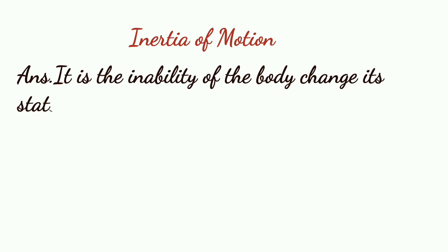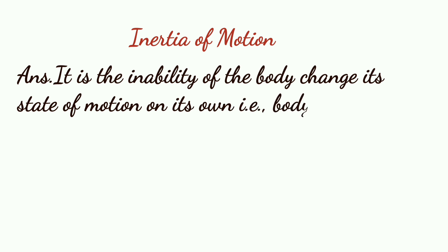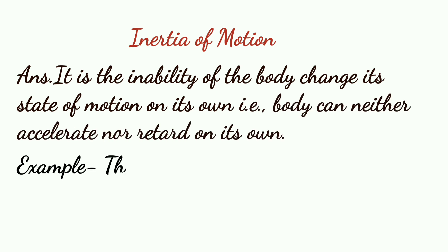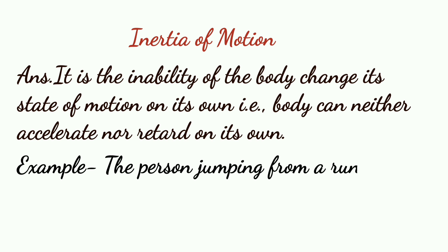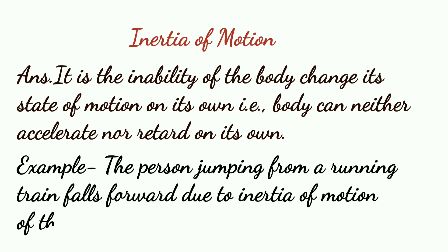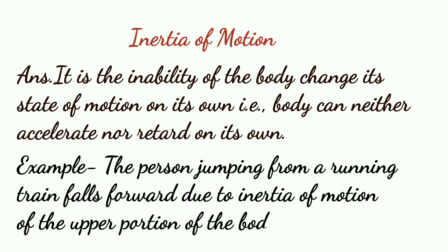Inertia of motion is the inability of the body to change its state of motion on its own — that is, a body can neither accelerate nor retard on its own. Example: a person jumping from a running train falls forward due to inertia of motion of the upper portion of the body.